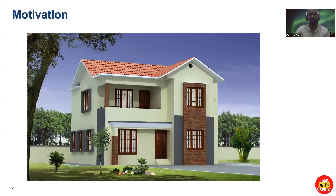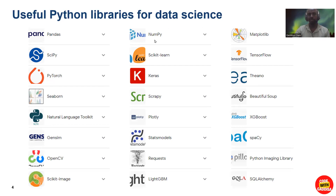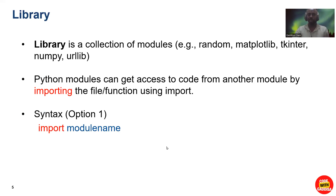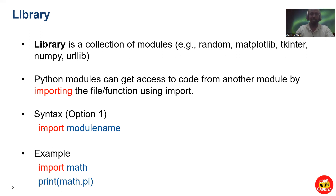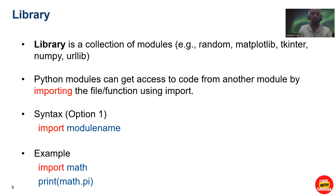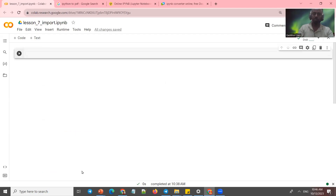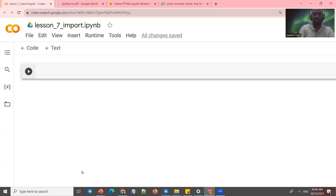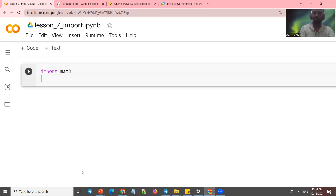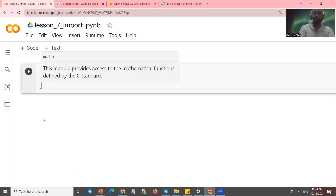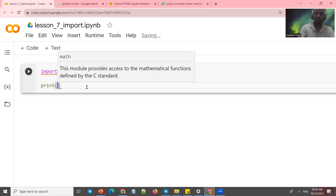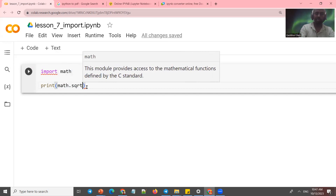This is a typical example of import syntax. The syntax is: import, then provide the module, package, or library name. For example, if you import the math library, you can use functions like square root — for instance, the square root of 25.